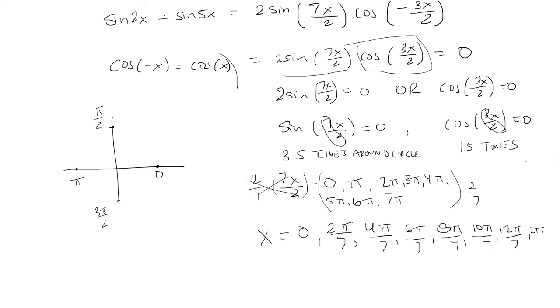So the first time we're on the circle will be pi over 2. So actually I'm going to write it over here. So we have 3x over 2 equals first time around the circle is pi over 2 and 3 pi over 2.